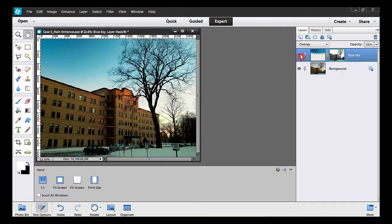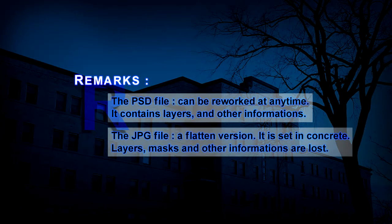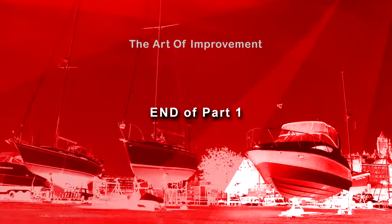Let's see before and after the improvement. Here's the blue sky. In order to keep your work you can save it in the PSD format. This format allows you to rework your photo afterwards if necessary. The JPEG is a flattened version, but it can be easily shared on the internet — it is very light. So thanks for watching and I'll see you in my next tutorial. Bye.